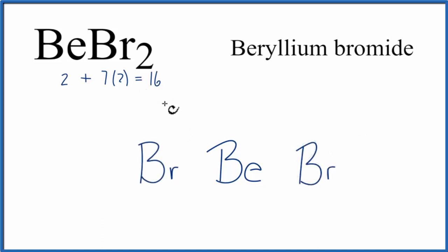So we have 16 total valence electrons for this Lewis structure. Let's start by putting a pair of valence electrons between atoms to form a chemical bond. We've used 4, so now we have 12 more left.